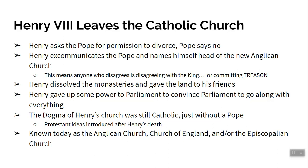Henry leaving the Catholic Church worked like this: he asked the Pope for permission for a divorce, the Pope said no, so Henry excommunicated the Pope, named himself head of the church, and called it the Anglican Church. Anyone who disagreed was disagreeing with the king — a capital offense. Henry also dissolved the monasteries and gave the land to his friends so the Catholic Church would have a hard time getting it back. He made a deal with Parliament, offering to give up some power in exchange for their support. In reality, Henry's church was still Catholic — just without a Pope. The Anglican Church, the Church of England, and the Episcopalian Church are all the same thing, and still very much Catholic-based.